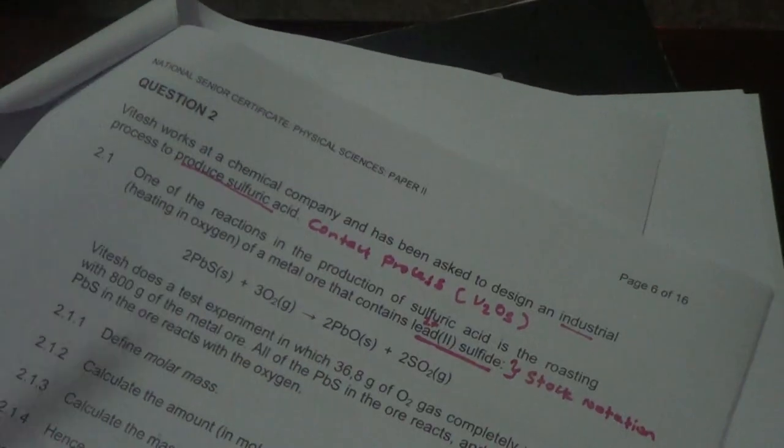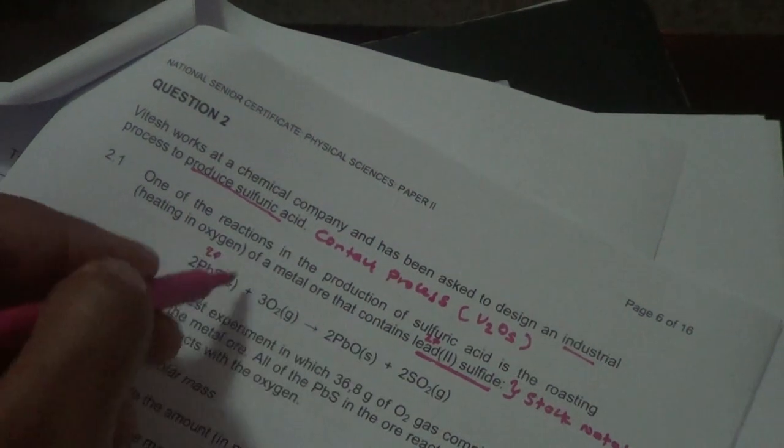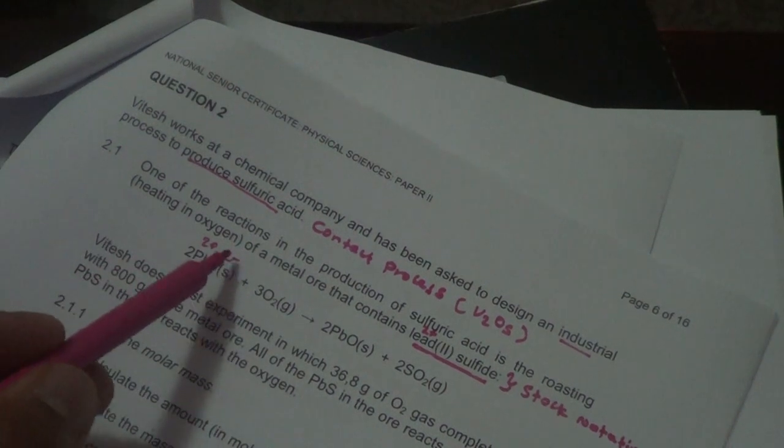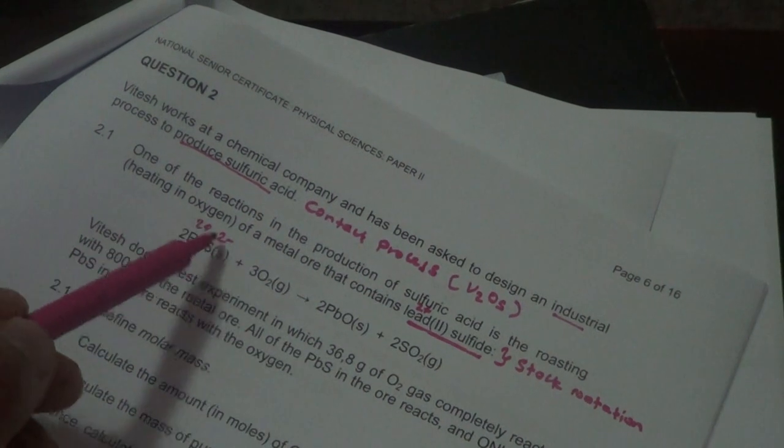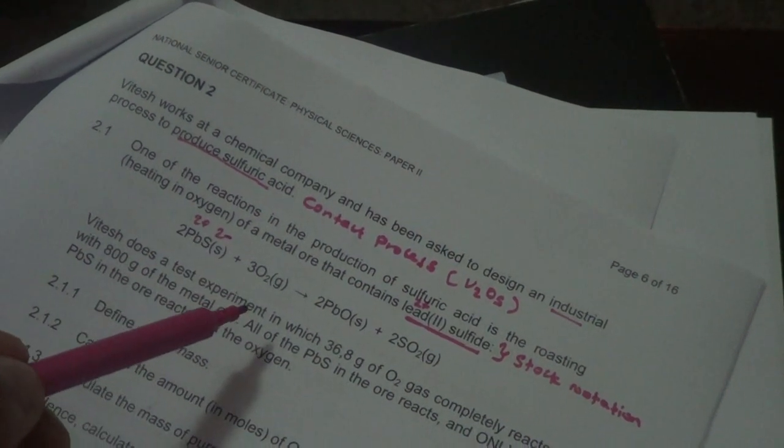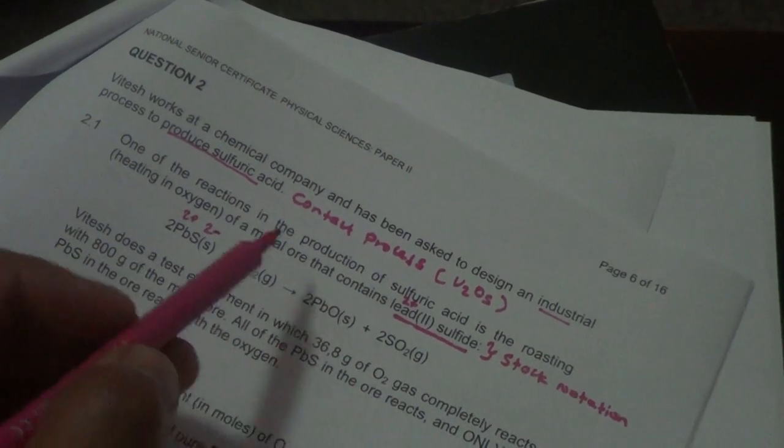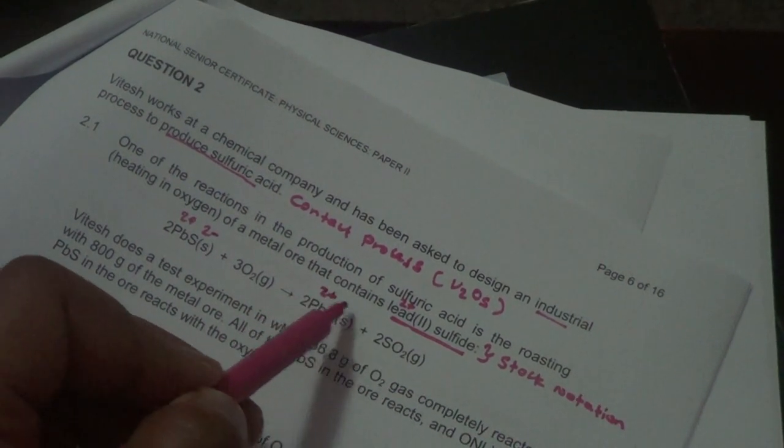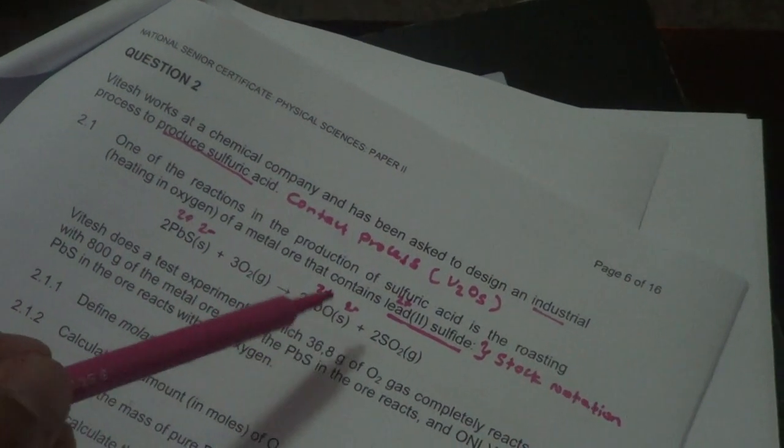Now that we know that lead is 2+, we know sulfur is an element of group 6, so it becomes 2-. You just say group number minus 8, which gives you 2-. It tells you that it is in excess of 2 electrons here. So everything multiplied by 2, it is essentially balanced. This is an ionic substance. Oxygen is also 2-, everything is balanced.